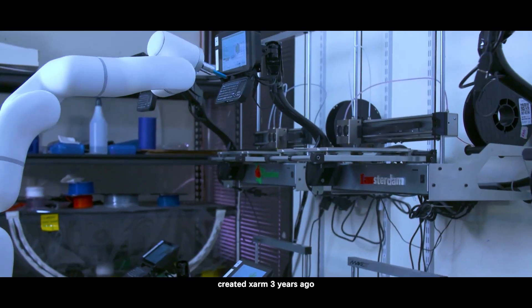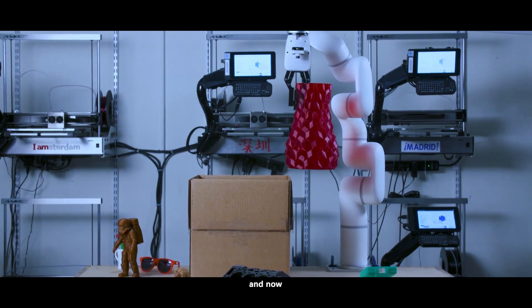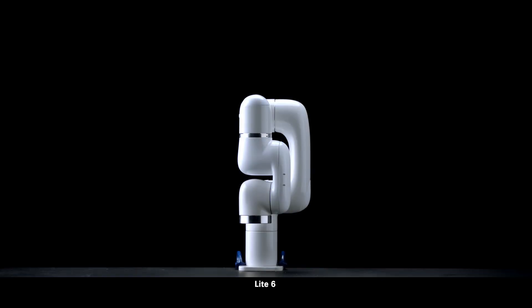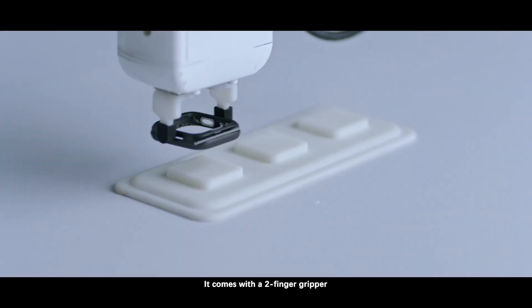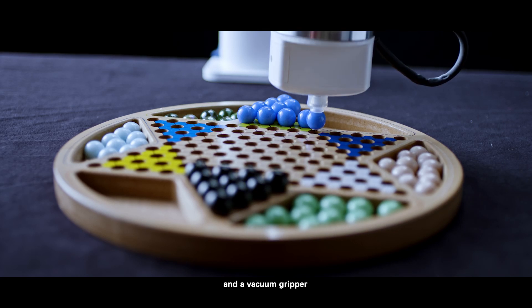U-Factory created X-Arm three years ago and now introducing Light6. It comes with a two-finger gripper and a vacuum gripper.